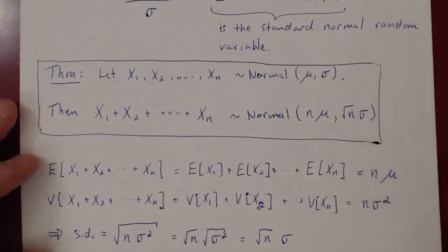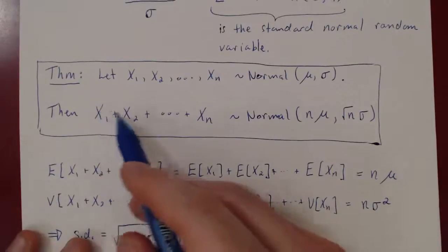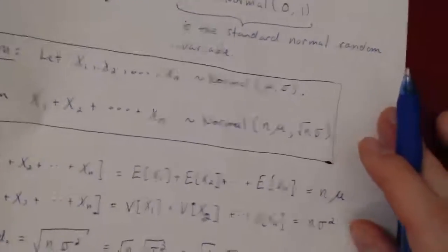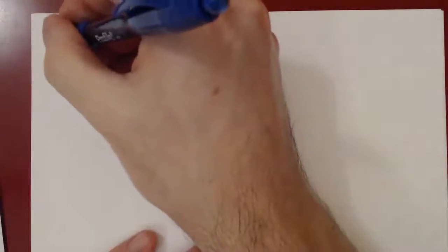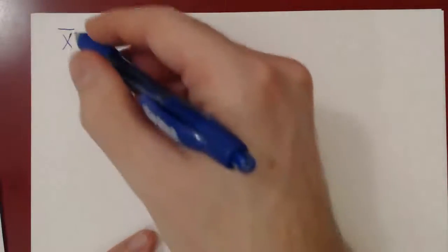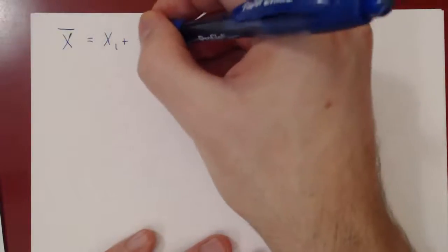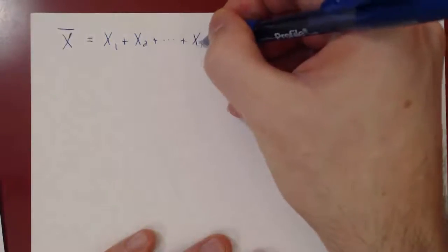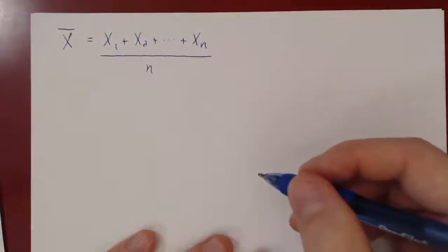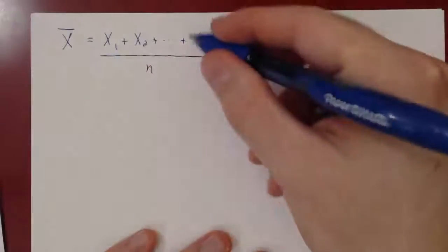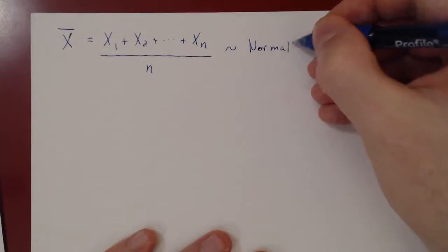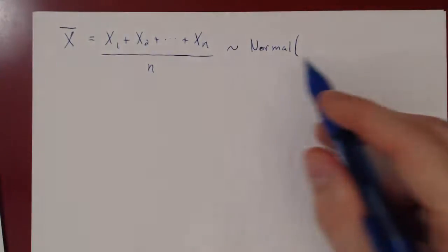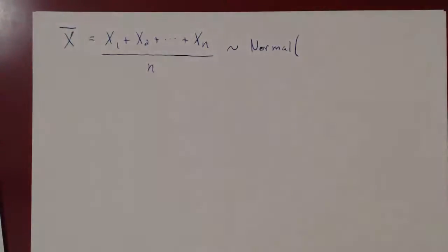From this theorem, we can derive another really important result about the average. What if we compute not the sum, but the average of the variables? The average, denoted x-bar, is the sum of all the variables divided by n. So x-bar equals x1 plus x2 plus up to xn, divided by n. This will still be a normal random variable, and we can easily find its mean and deviation from the sum result.